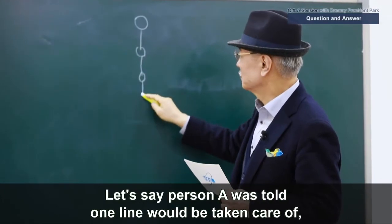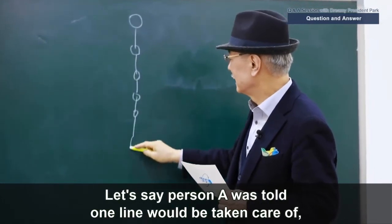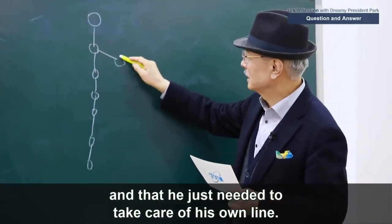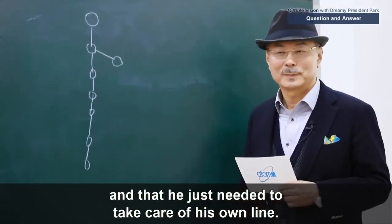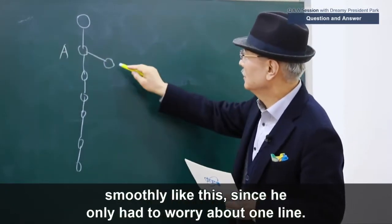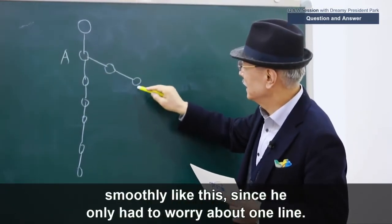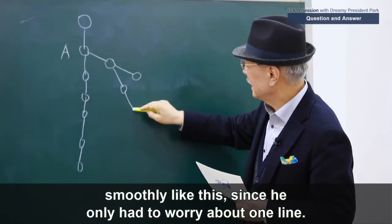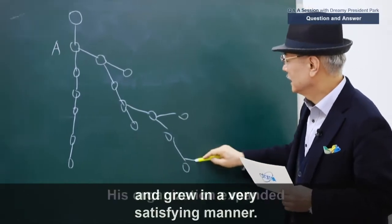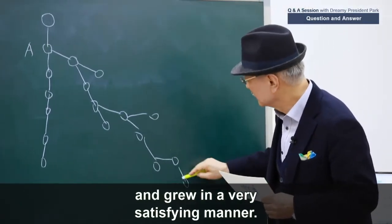Let's say person A was told one line would be taken care of and that he just needed to take care of his own line. Person A's line went down smoothly like this, since he only had to worry about one line. His organization expanded and grew in a very satisfying manner.